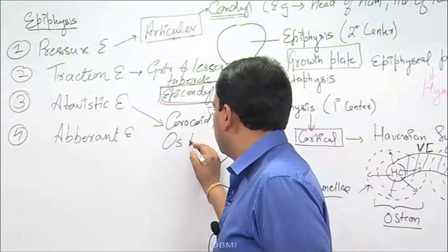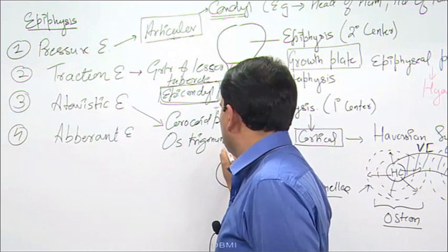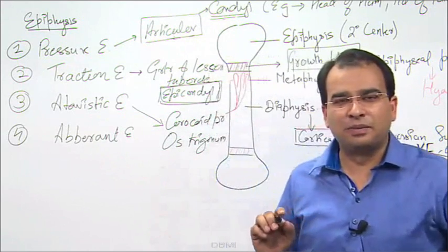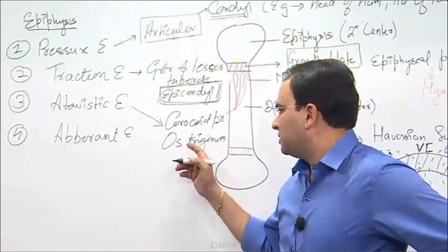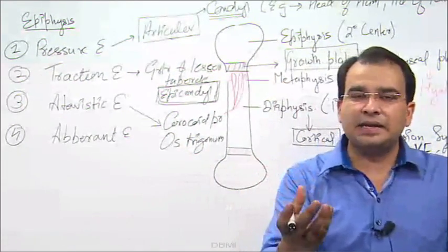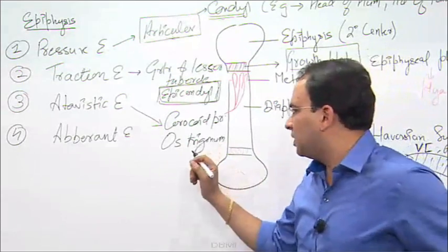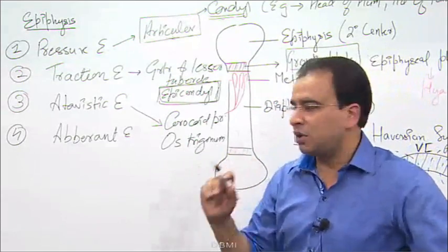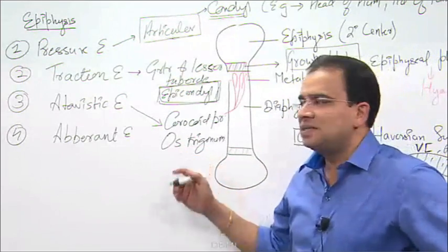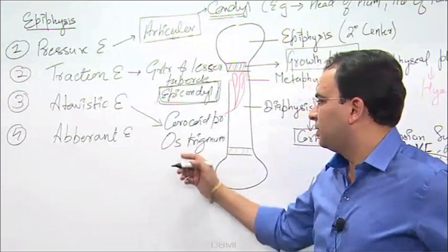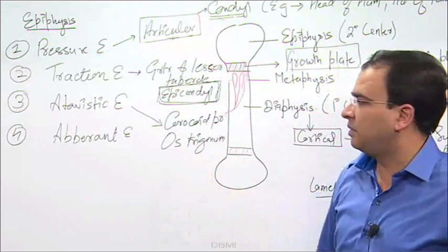Os trigonum — have you heard of this os trigonum? Where is this os trigonum? This os trigonum is present behind which bone? It is the posterior tubercle of the calcaneum, which we call os trigonum. So this is again an example of atavistic epiphysis.